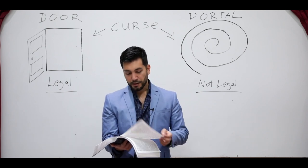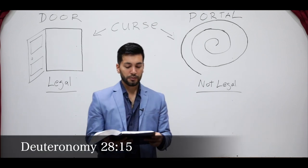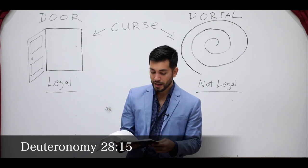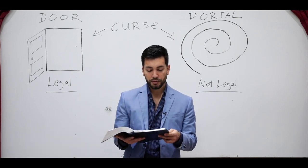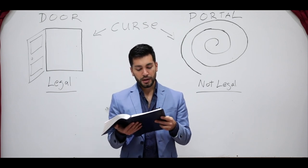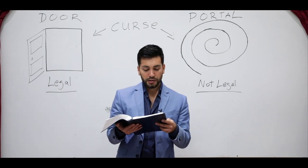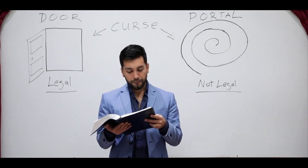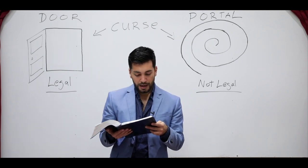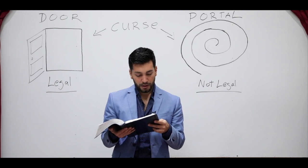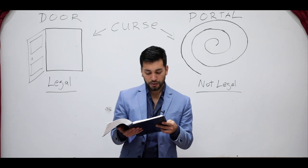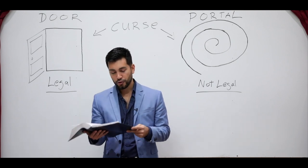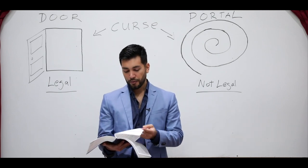And we see that those are the blessings from God because of keeping his commandments — not sinning, keeping the commandments. Then in the same chapter, chapter 28 starting from verse 15, we see the curses that God gives for not obeying the commandments, for breaking the commandments: 'But it shall come to pass, if you do not obey the voice of the Lord your God to observe carefully all his commandments and his statutes, that all these curses will come upon you and overtake you. Cursed shall you be in the city, and cursed shall you be in the country. Cursed shall be your basket and your kneading bowl. Cursed shall be the fruit of your body and the produce of your land. The Lord will send on you cursing, confusion, and rebuke in all that you set your hand to do.'